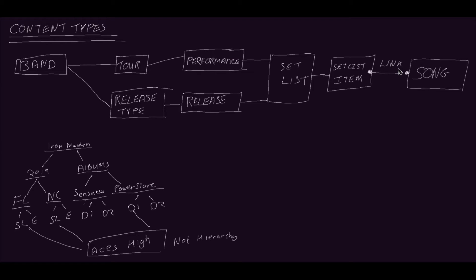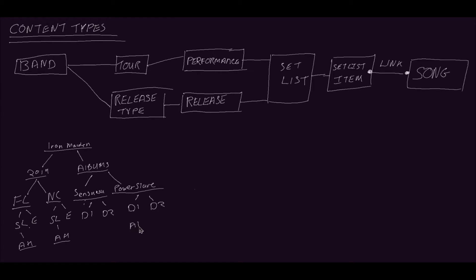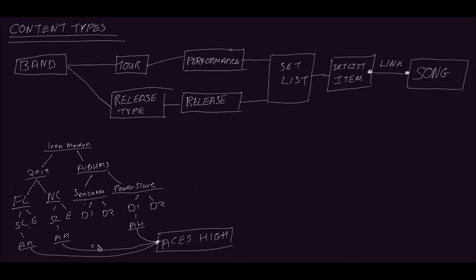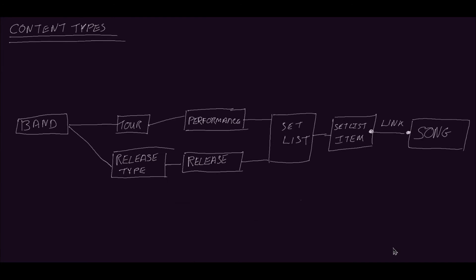So what we'll do is create a set list item content type, which acts as a bridge using a content link between lists for performances and releases and the actual song content items themselves. The other benefits are that the names of the songs can be modified in the set list item without affecting the song itself, and it also allows us to query content in both directions — you can get songs for a specific release and releases for a specific song. For example, the set lists for Florida, North Carolina, and disc one of Power Slave can all have set list items that point to the same song Aces High.